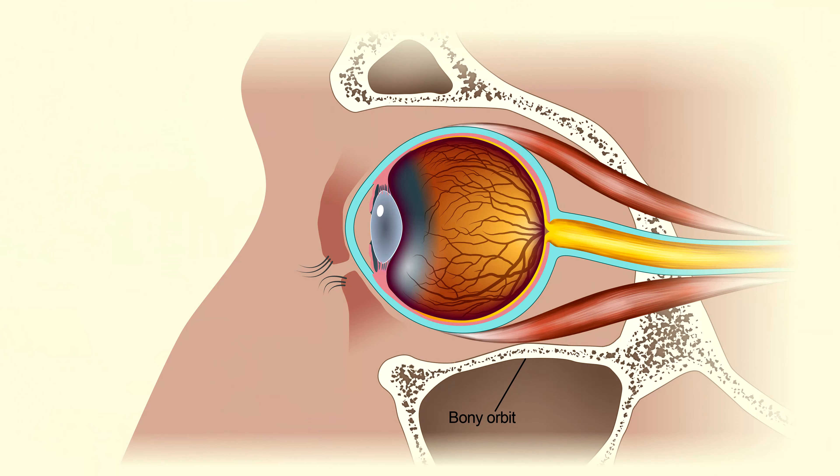Upon looking at the case, we realized that the eye injury was not only an enucleated eye, but there was also an orbital floor fracture — the bottom thin layer of the bony orbit had been fractured.